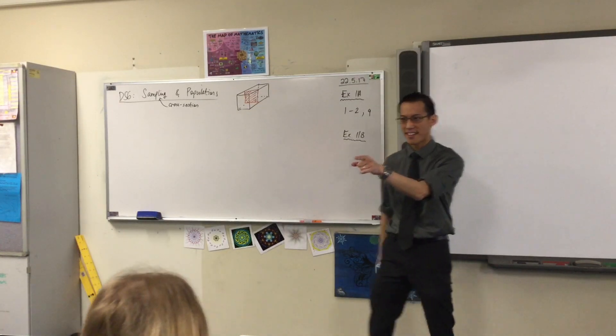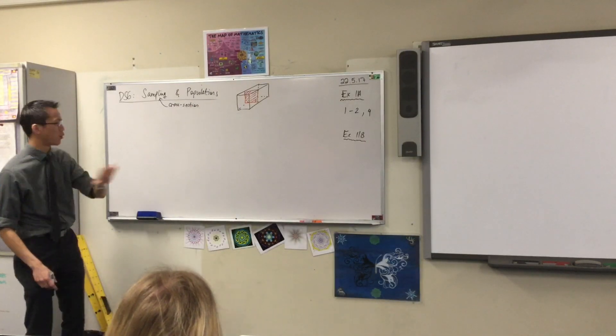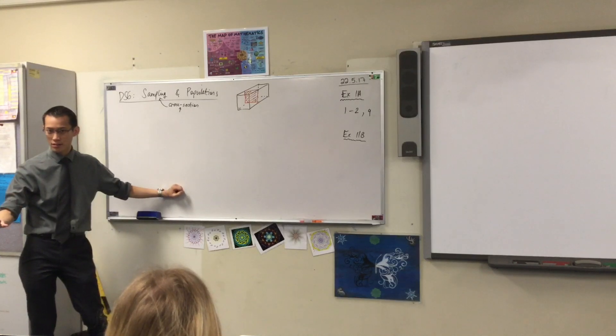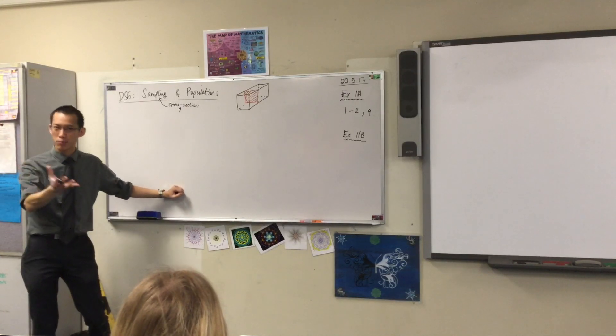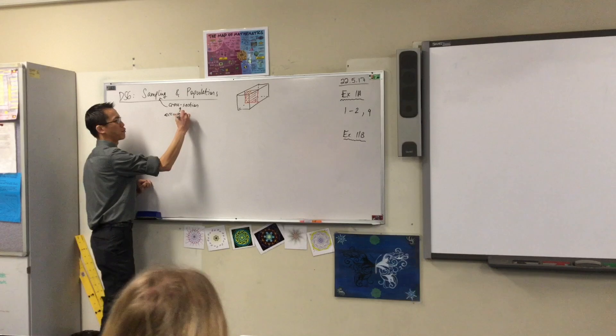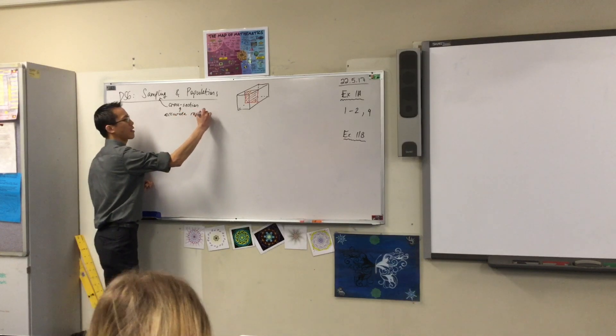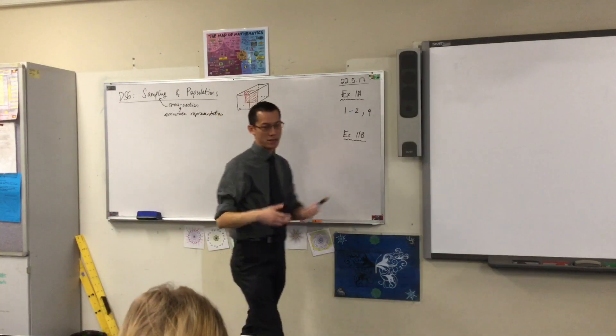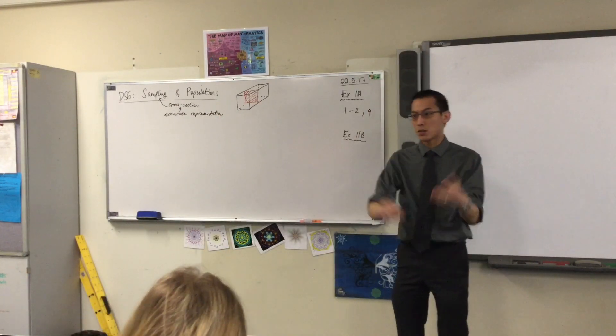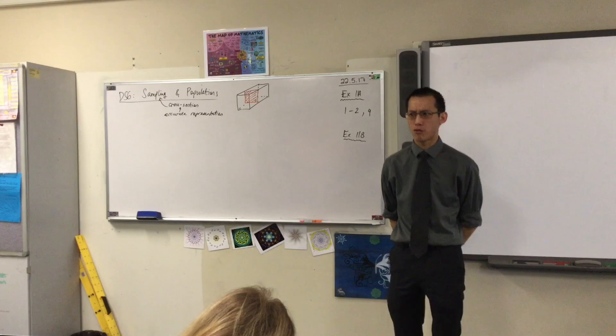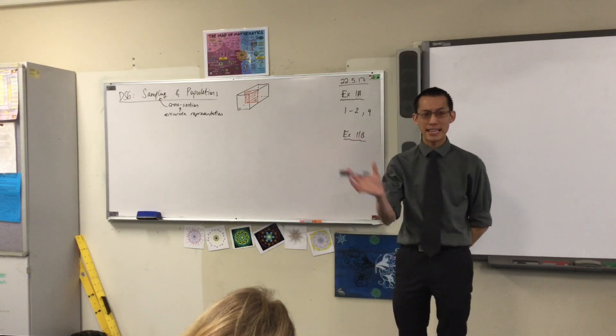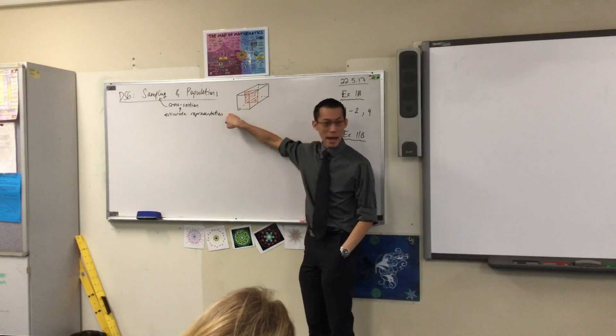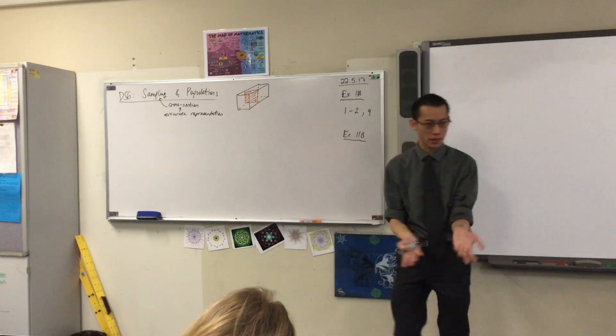Okay. Akil just said a phrase that's really important for us all to get down, which is that you want your cross-section to be an accurate representation, super important phrase, of your population, right? And we can see there are immediately problems by using our class as an accurate representation, because we're all from the same grade, right? So we've got 7, 8, 9, 10, 11, 12 in the school, so immediately we've run into problems as to whether our class is an accurate representation of the population.